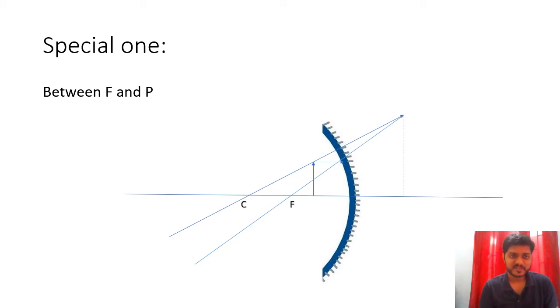Now, this is the special one because if an object is placed between focus and the pole, then it will have a virtual image.